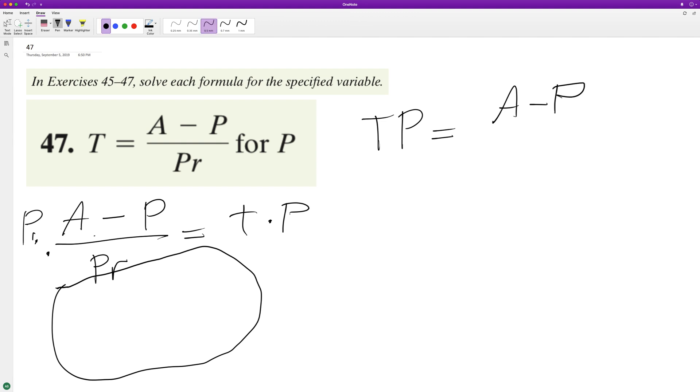actually, you know what, I'm going to multiply by the R too, times PR. Okay, so now what we'll do is we'll add P to both sides. So we have TPR plus P is equal to A. Now what we can do...